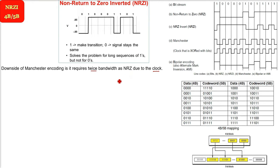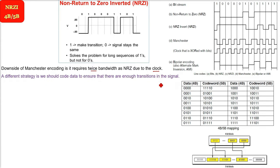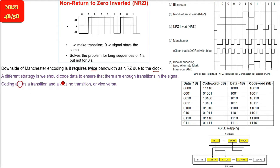So there can be different strategy thoughts. We should code data to ensure that there are enough transitions in the signal. We can code the data itself — coding a 1 as a transition and a 0 when there is no transition, or vice versa. This kind of coding is called NRZI, or Non-Return to Zero Inverted.